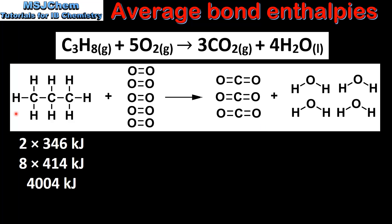We will start by counting the number of each type of bond in the reactants and the products. In propane we have 2 carbon-to-carbon single bonds and 8 carbon-to-hydrogen single bonds. We then multiply the number of each bond by its average bond enthalpy value: 2 multiplied by 346 kJ for the C–C bonds, and 8 times 414 kJ for the 8 C–H single bonds.